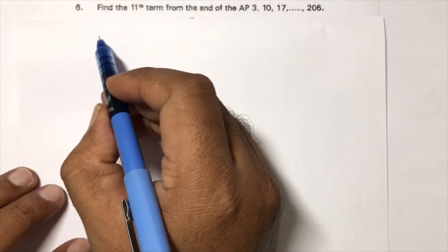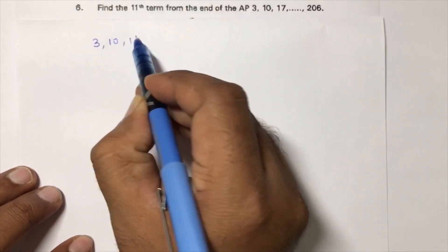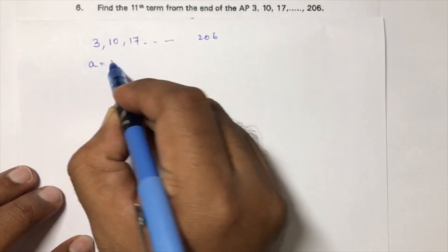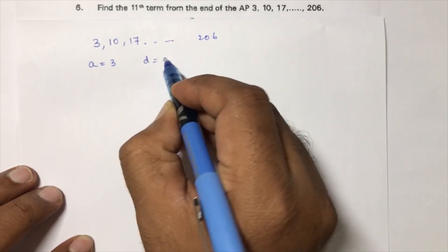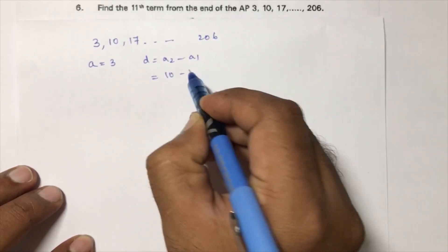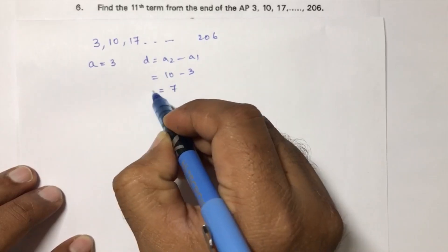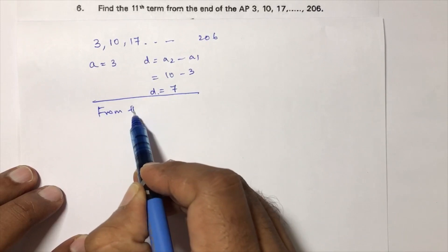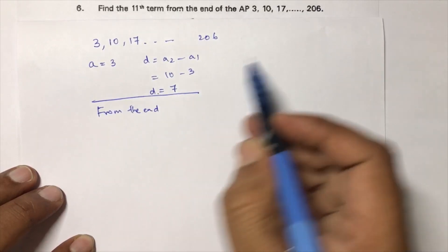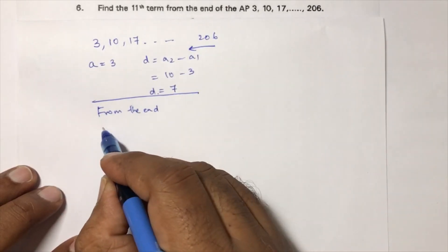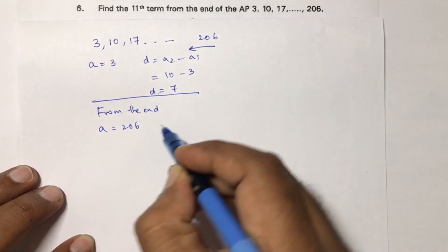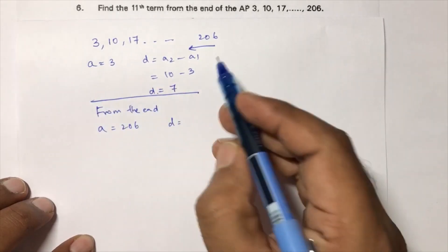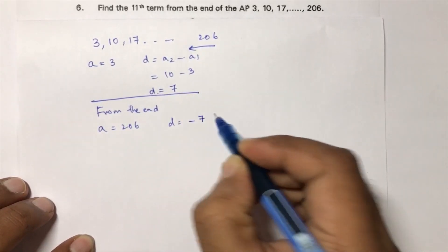Next question: find the 11th term from the end of the AP: 3, 10, 17, ..., 206. The first term is 3, common difference = 10 − 3 = 7. Since we need the term from the end, start the series from 206. The new first term is 206 and the common difference becomes −7.